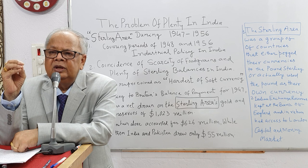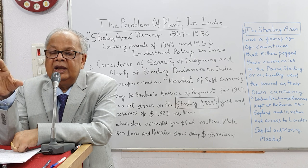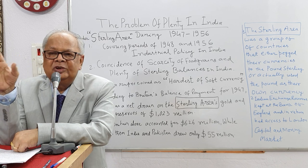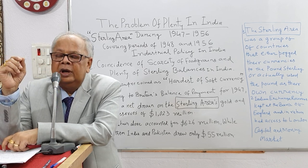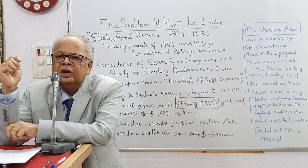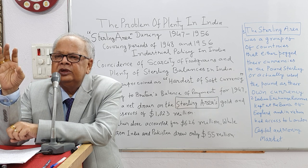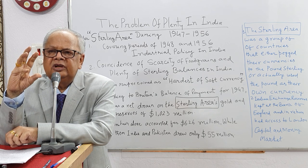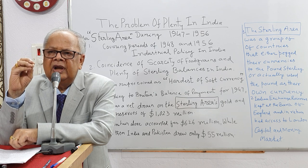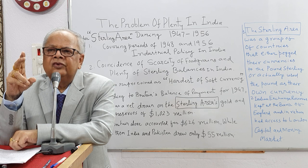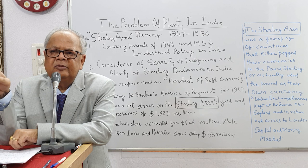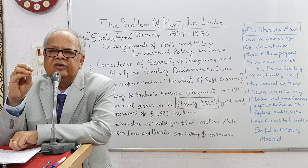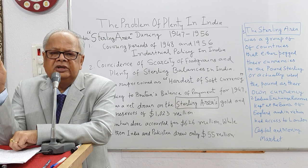1990 is known as the breakdown of the socialist bloc. So this is the background of 1947 to 1956 conditions of India's sterling balances and the sterling area and sterling block, which ended in 1973 with the end of dollar convertibility into gold scrapped by the USA. Fixed exchange rate was scrapped in 1973 and floating exchange rate was implemented all over the world. Thank you.